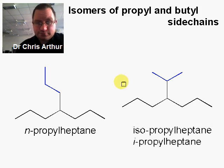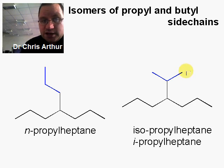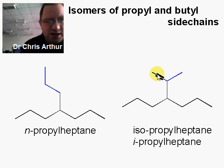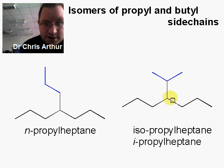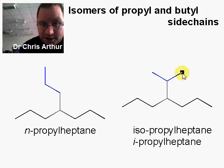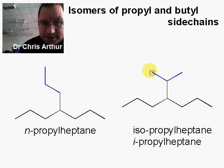Iso comes from the Greek meaning 'equal.' If you think about this chain, we've come up this bridge and then split it equally — that's where the iso comes from. This group is equally split, and we'll see that again in a moment.